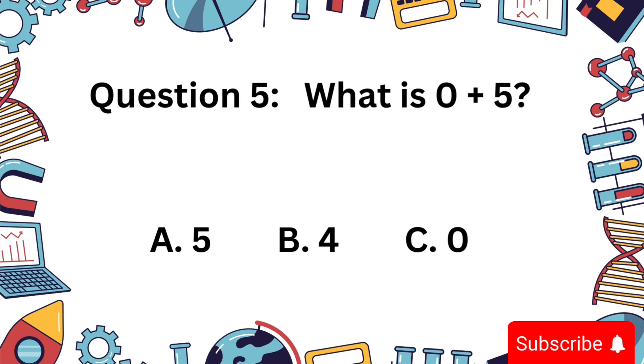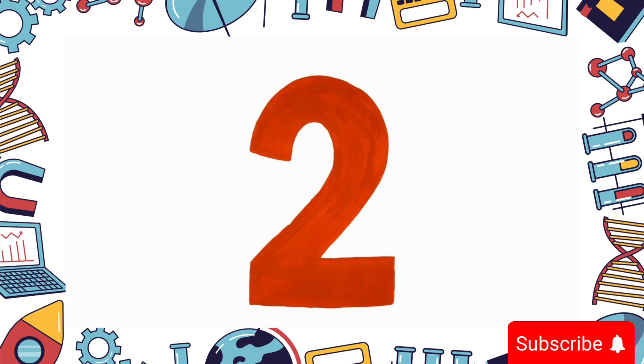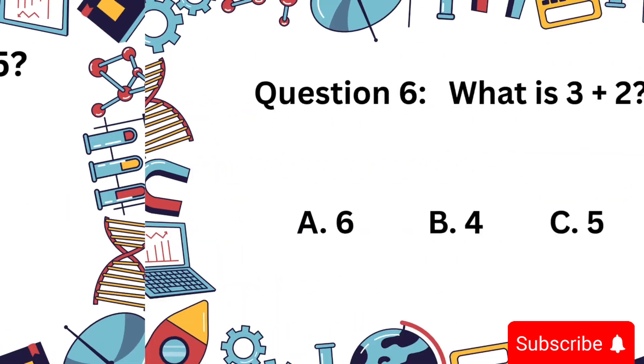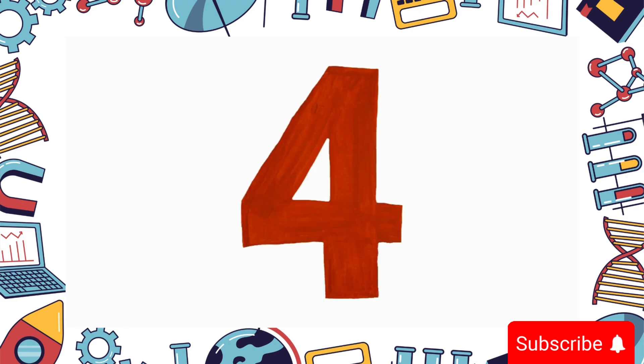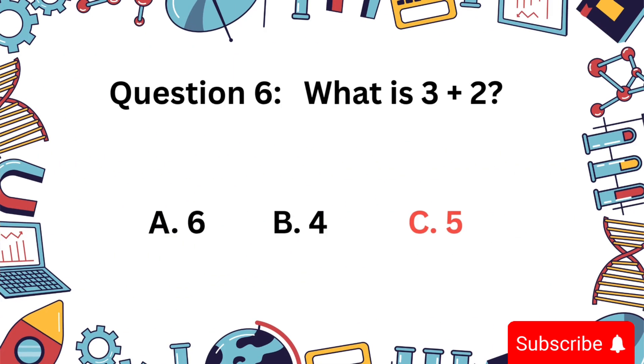Here's an easy one. What is 0 plus 5? Is it 5, 4, or 0? Correct answer: 5. Let's try 3 plus 2. Is it 6, 4, or 5? Correct answer: 5.